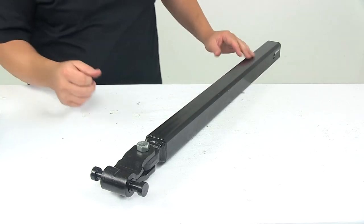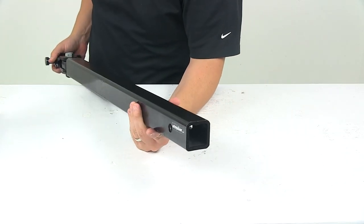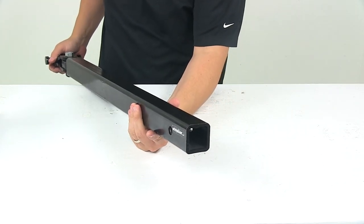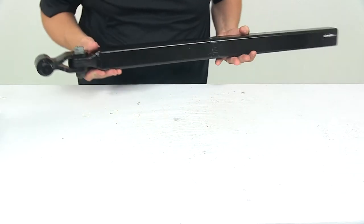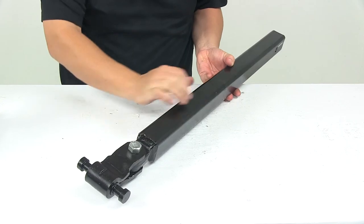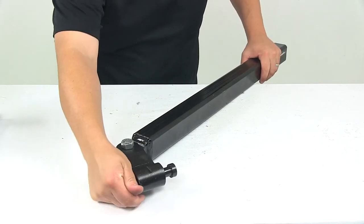This coupler tube slides directly into a standard two inch receiver and secures in place with a pin and clip or a pin and lock. Now this is a 30 inch tongue extension which allows extra distance between the vehicle and the trailer. This is perfect for trailers hauling extended loads.